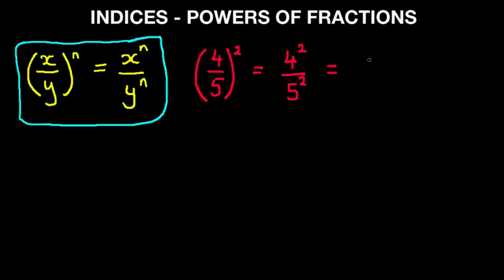Now we can work this out. 4 to the power of 2, 4 squared is 16. 5 squared is 25. So 4 over 5 to the power of 2 becomes 16 over 25.